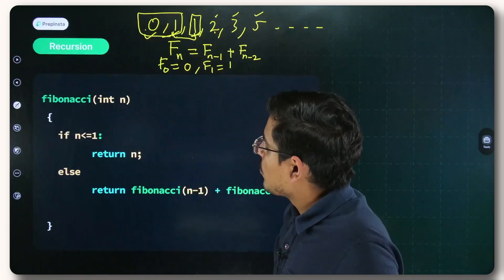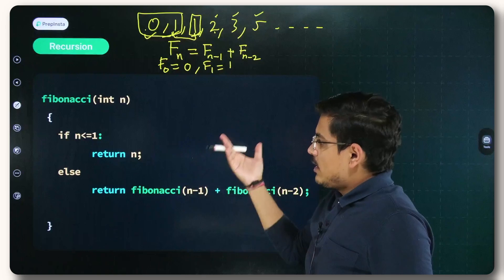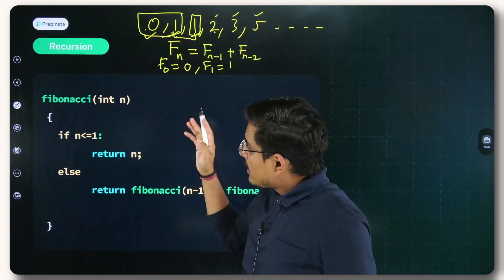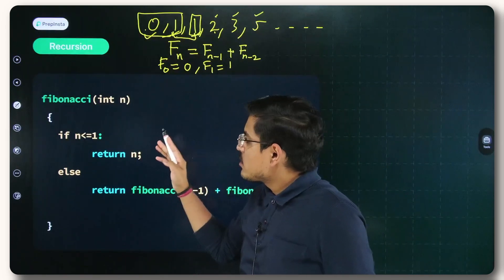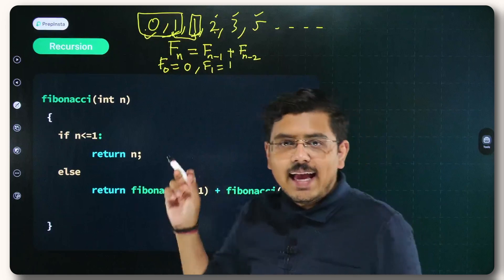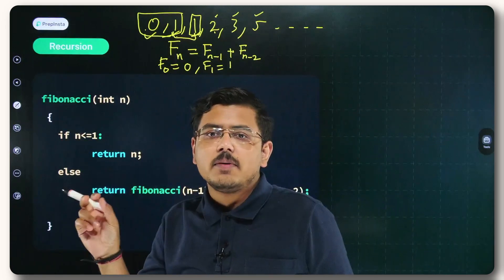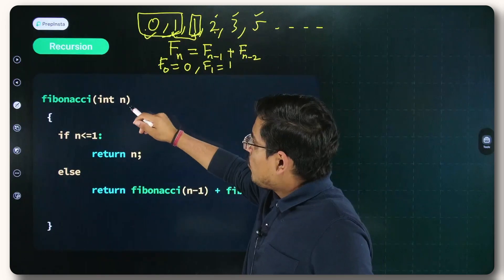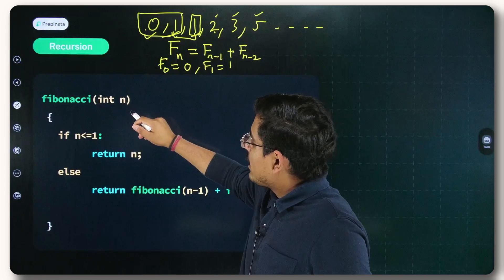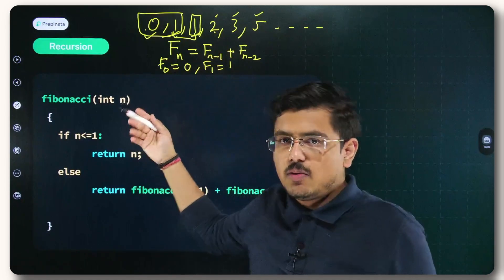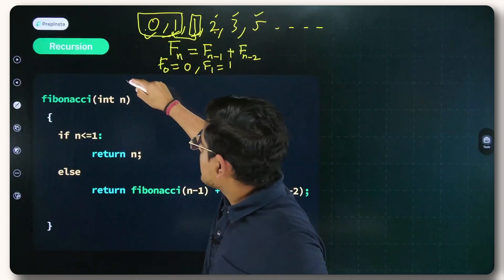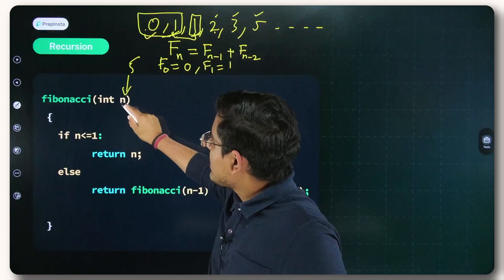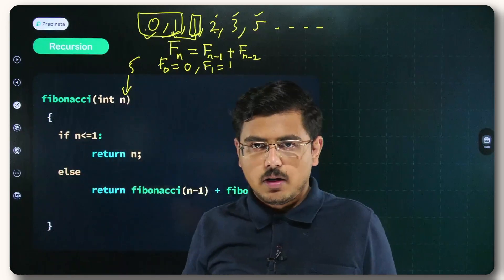In this pseudocode, what we are trying to do is calculate the Nth term in the Fibonacci sequence. For example, if I want to calculate the 5th term in the Fibonacci sequence, I'll pass N = 5 here.